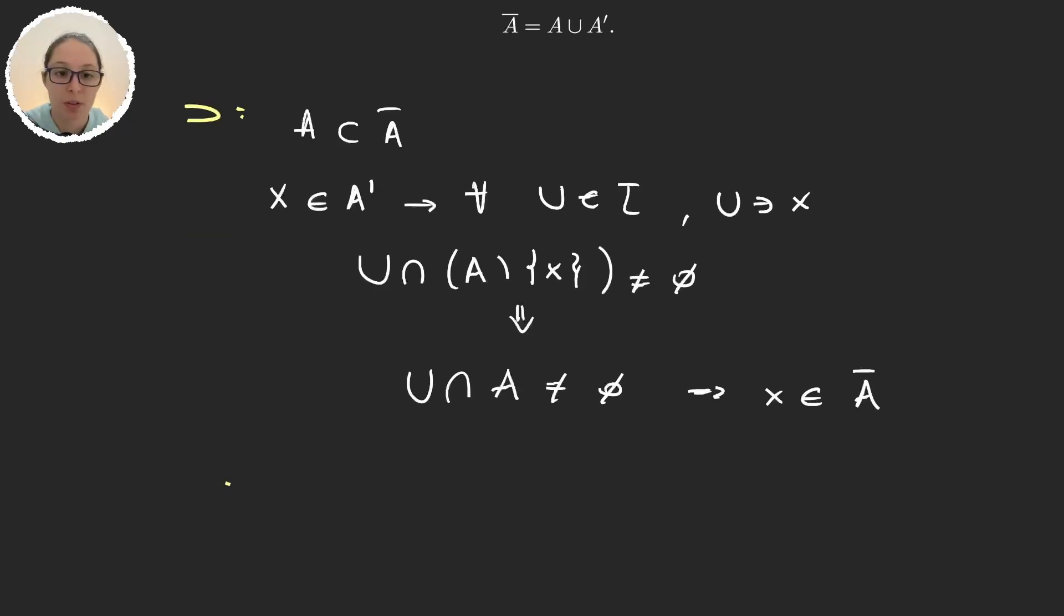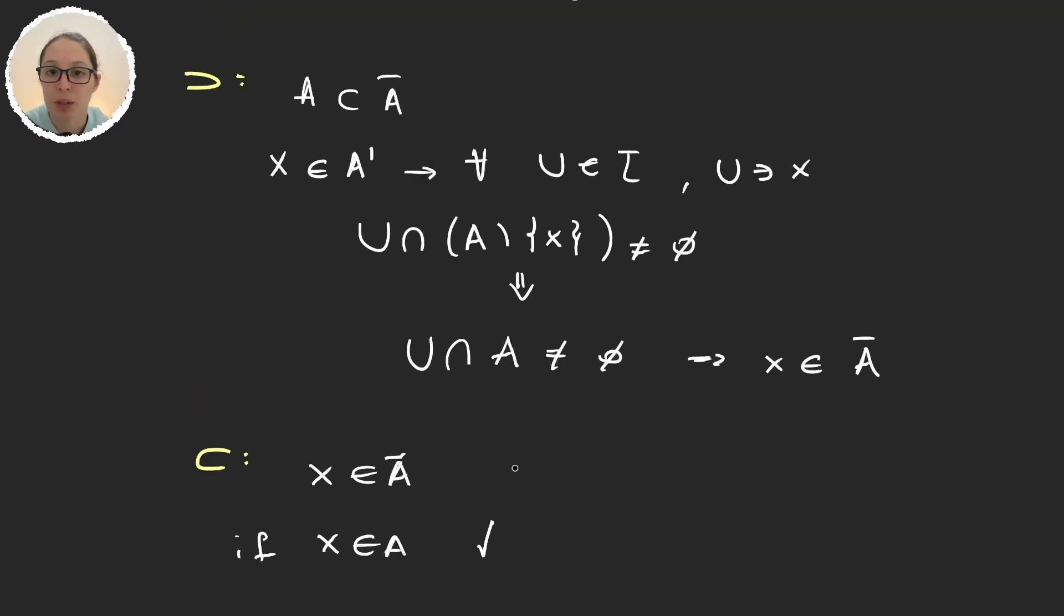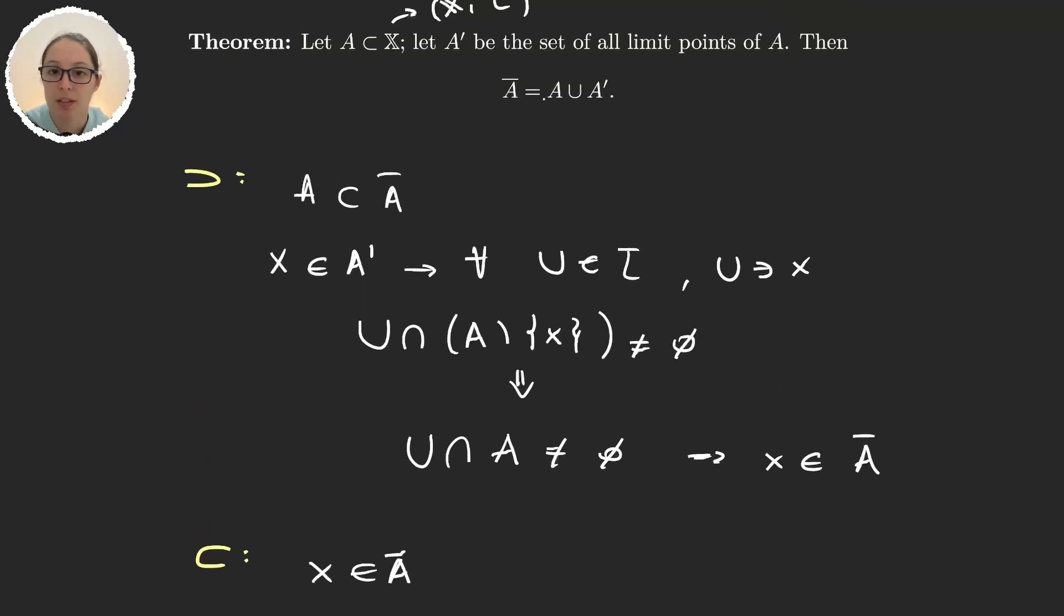Now let's do the other inclusion. So let's take an element x in the closure of A. If x was an element in A, then we already have what we wanted because it would be in this part of the union.